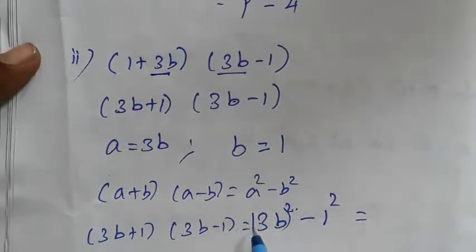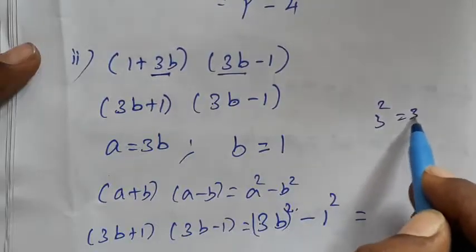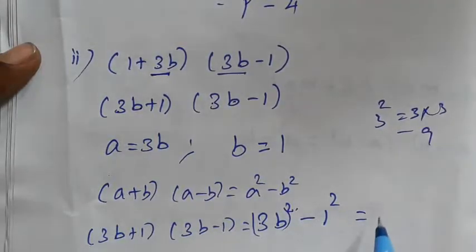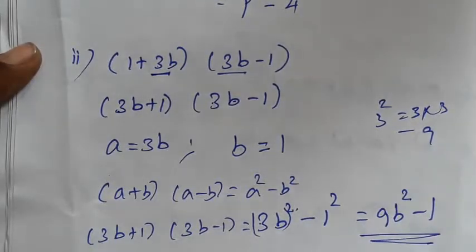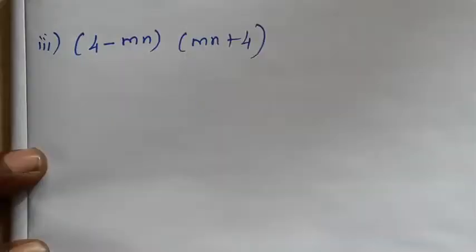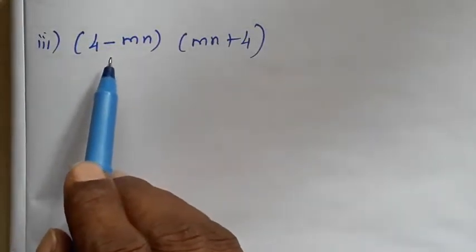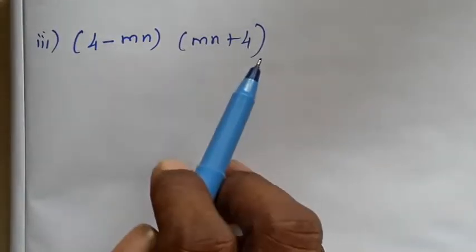3P squared minus 1 squared. 3 squared is equal to 9, so it equals 9P squared minus 1.